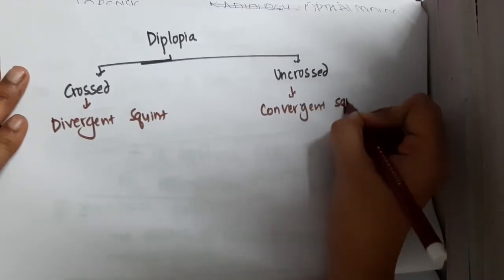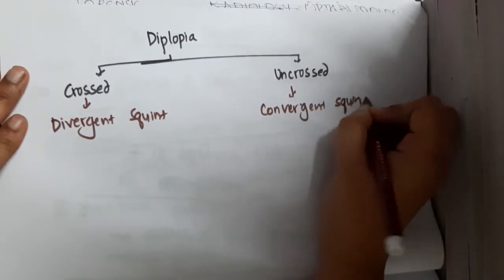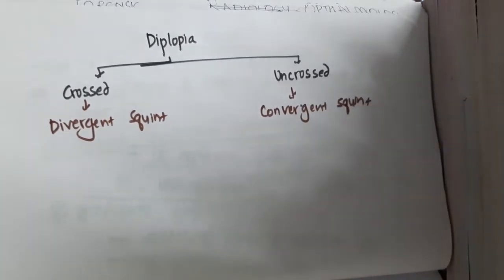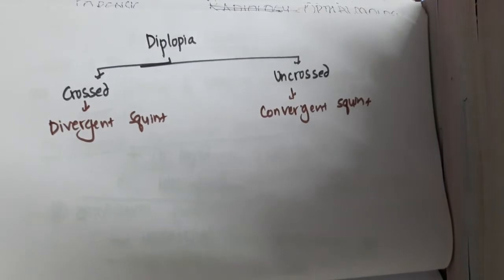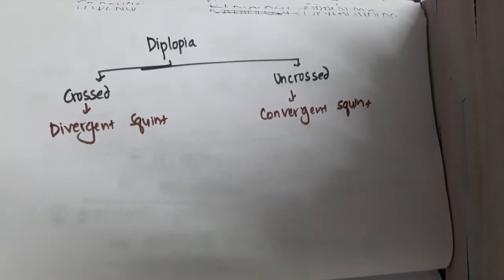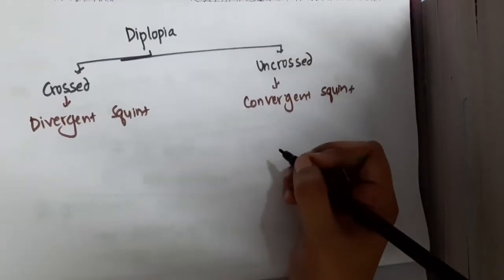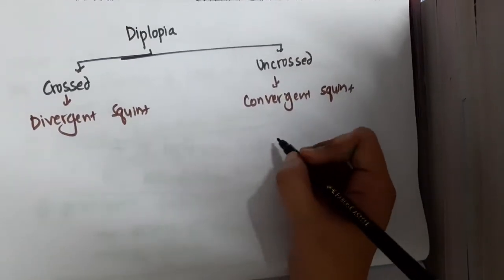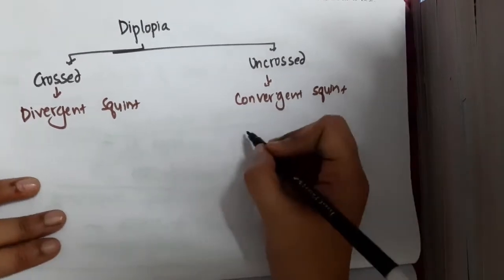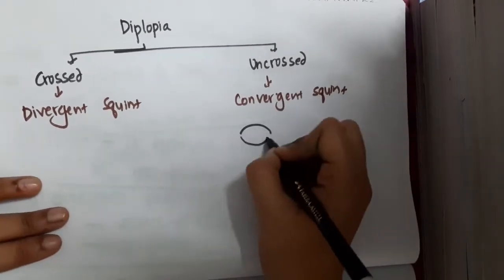Let us see what is crossed diplopia and what is uncrossed diplopia. We will first see uncrossed diplopia, which is convergent squint.